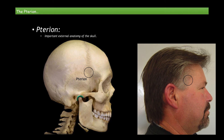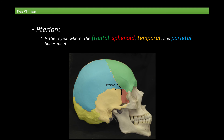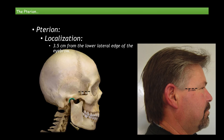Let's talk about the tyrion, which is part of the important external anatomy of the skull. The tyrion is found in the temporal fossa, and is the region where the frontal, sphenoid, temporal, and parietal bones meet. Tyrion localization can be described as 3.5 cm from the lower lateral edge of the eyebrow going in the posterior direction, then a 2 cm perpendicular line in the superior direction.